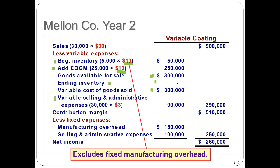We also include variable selling and administrative expenses: 30,000 times $3 gives $90,000. Adding $300,000 plus $90,000 gives total variable expenses of $390,000. Taking $900,000 minus $390,000 gives us the contribution margin — a concept not used under absorption — which is sales less variable costs. Then we subtract only the fixed portion: fixed manufacturing overhead plus fixed selling and admin totaling $250,000. So net income is $510,000 minus $250,000 equals $260,000.